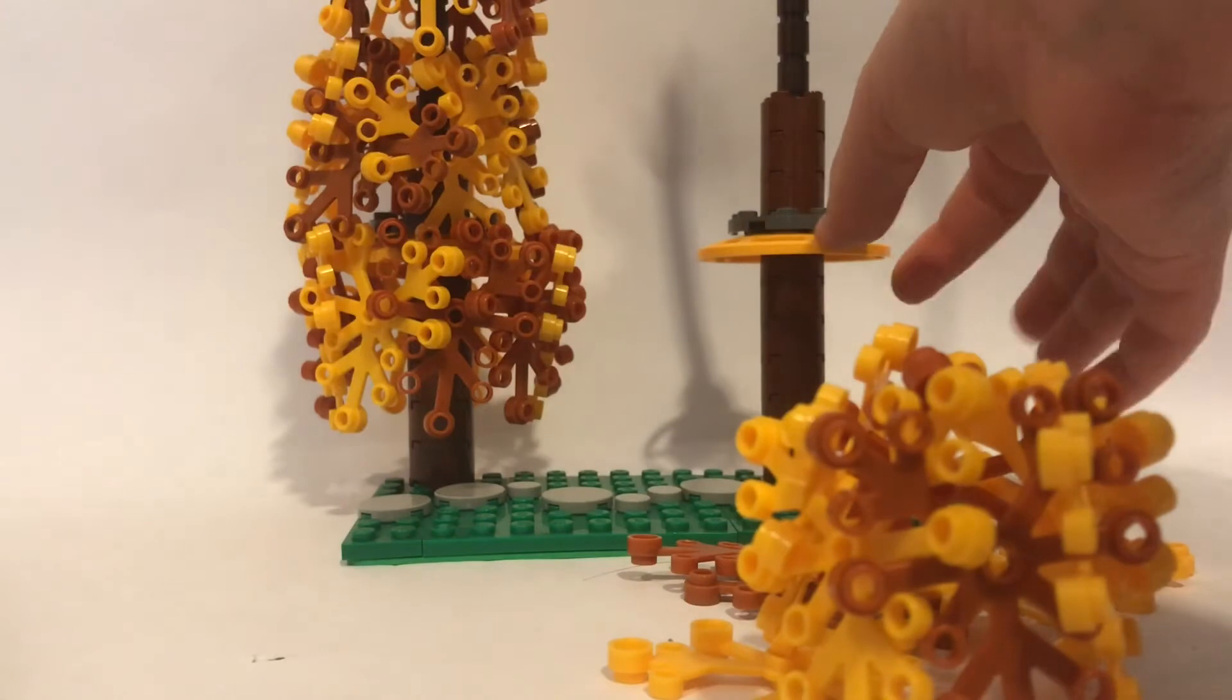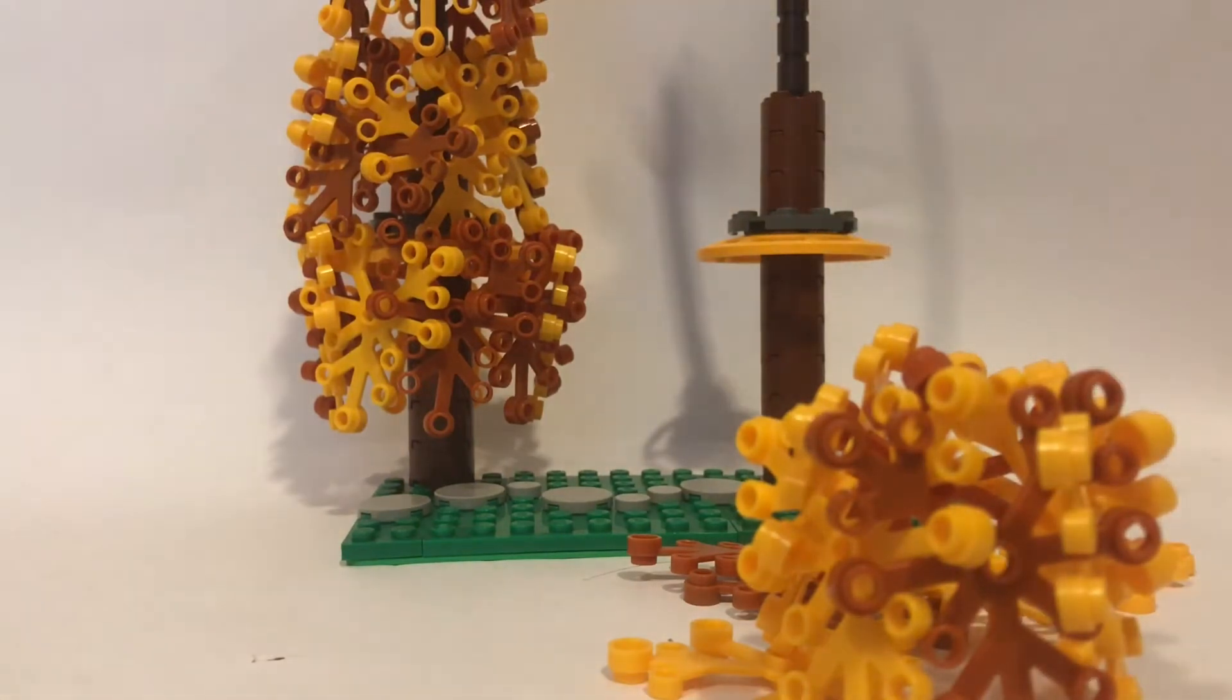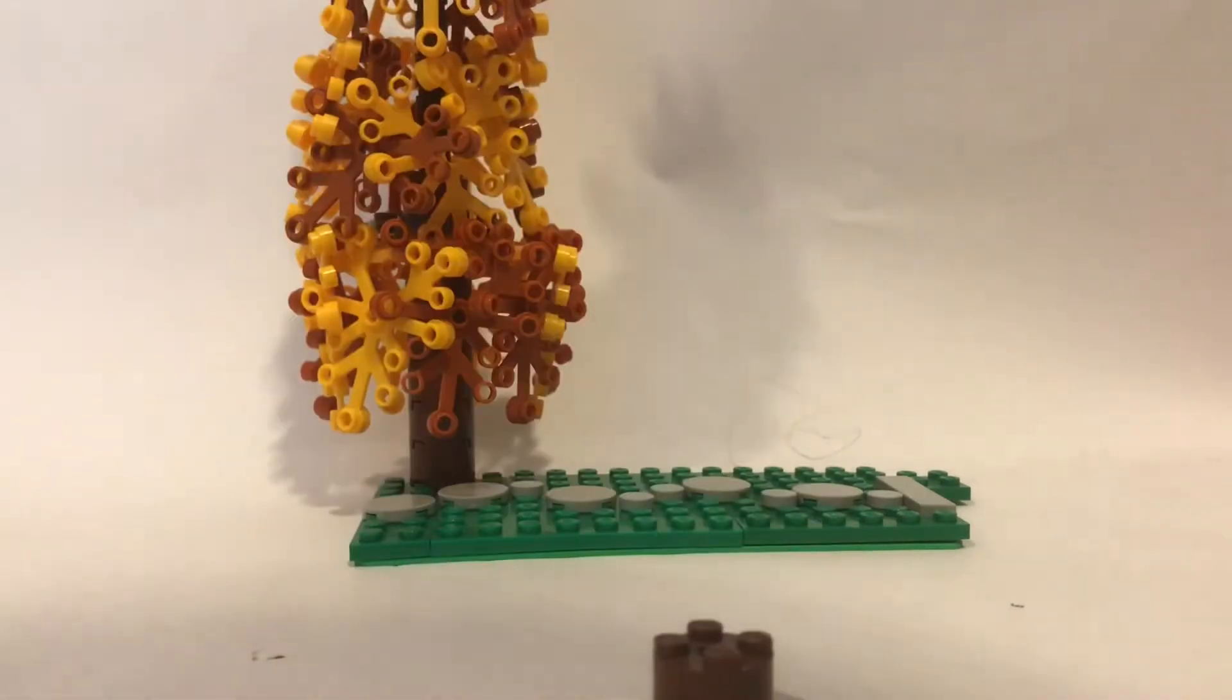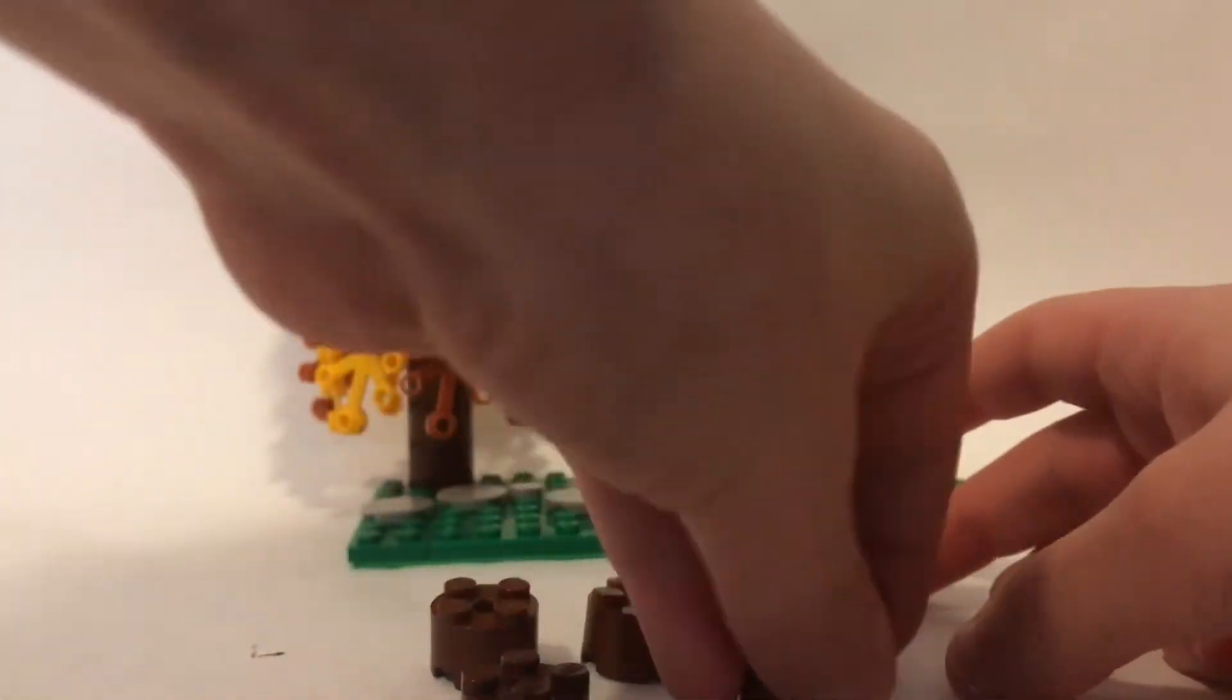Now let's build the base of the tree. So to do this we're going to start with these brown circular pieces. We're going to get six of those and we're just going to build them up.